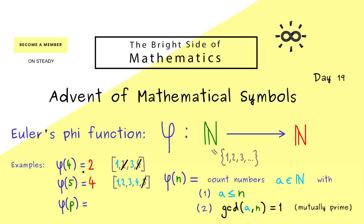In fact, with this reasoning here, we can immediately calculate φ(p) when p is a prime number. And now you know this should be p minus 1.